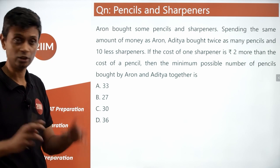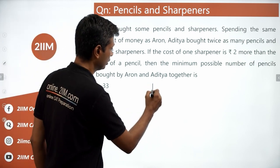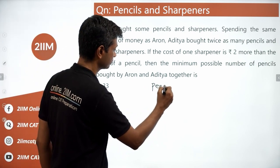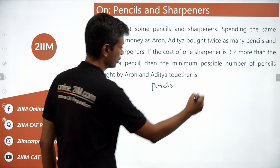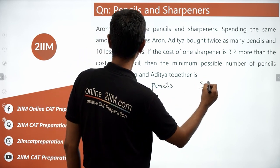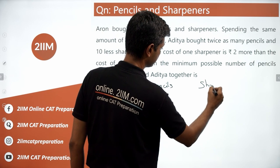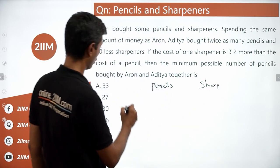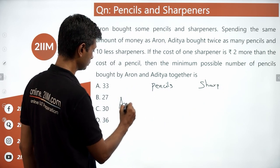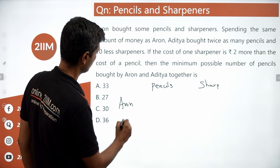Very interesting question, slightly not that easy. So you are buying pencils and sharpeners. We are going to talk about Aaron and Aditya.